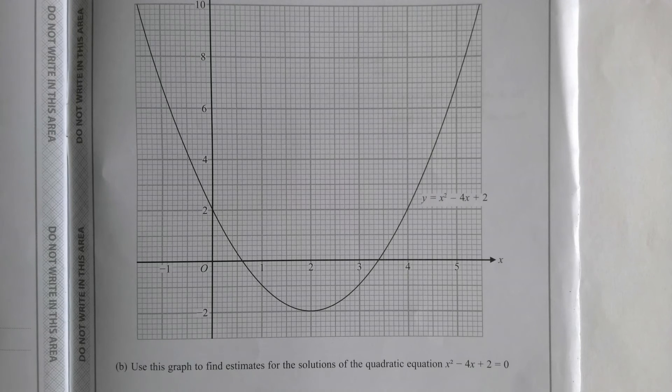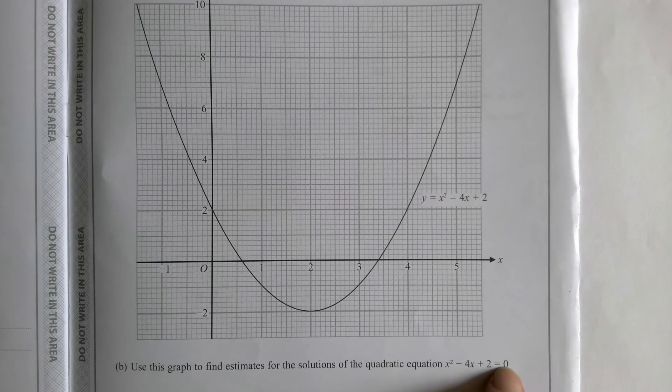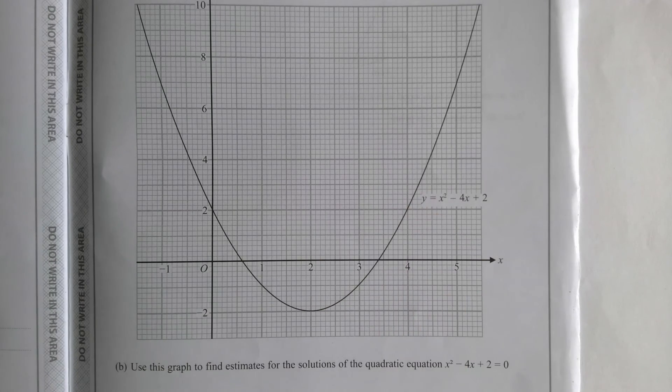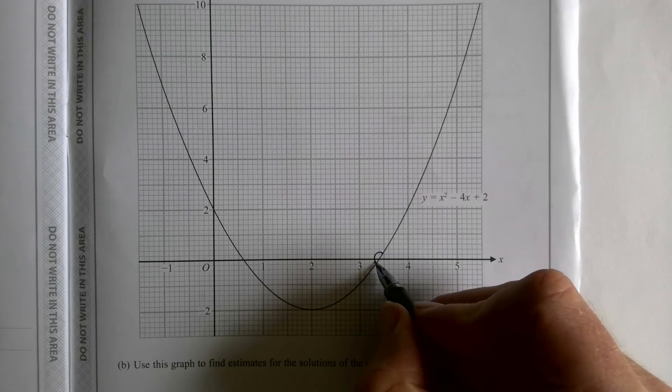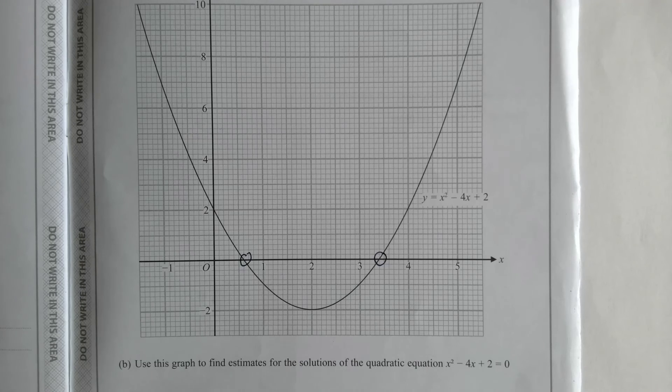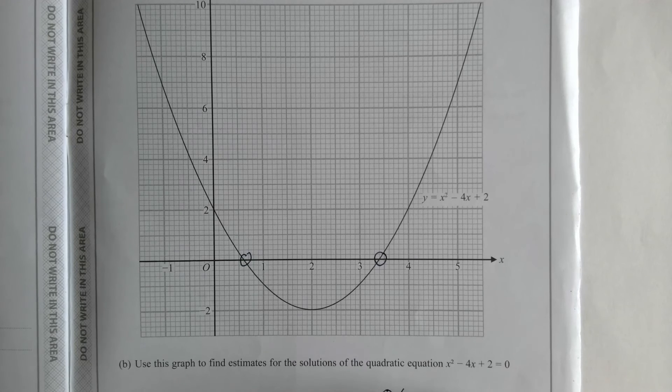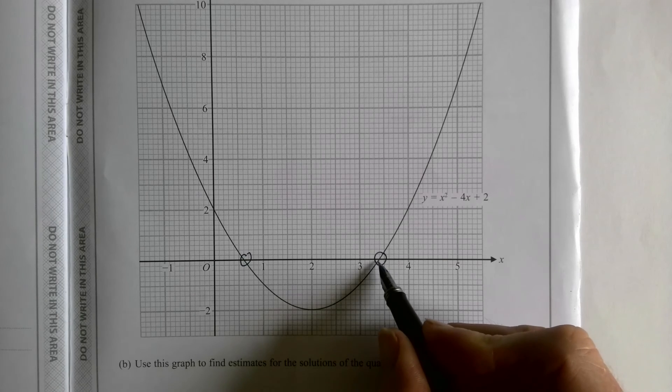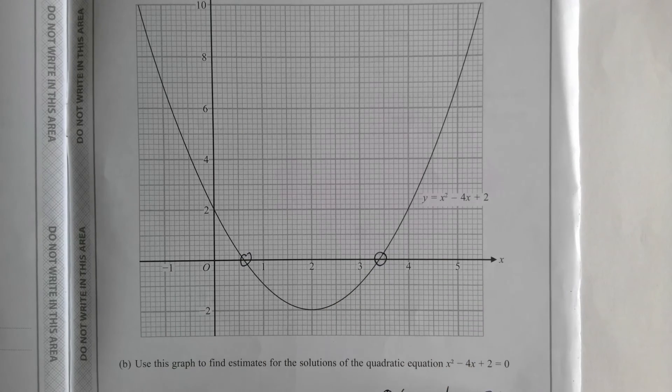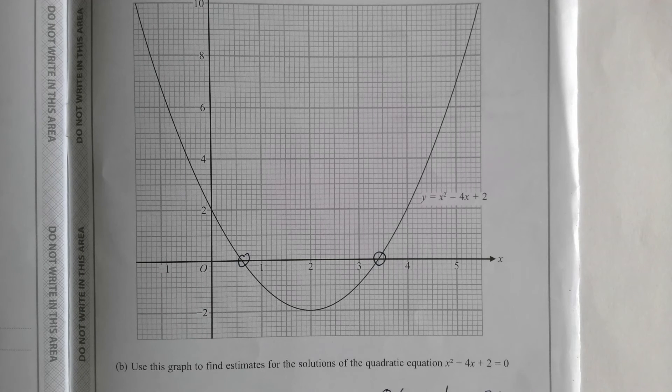Part B is a little trickier because it just gives you this curve. Y equals x squared minus four x plus two. It says find estimates for the solutions. Well, they're known as the roots. The solutions are what value of x will make y zero. Can you see the difference there? You've got zero and you've got y. So when is y zero? It's zero there and it's zero there. So the solutions will be, well, it goes through at 0.6 there. So x equals 0.6 and x equals 1, 2, 3, 3.4. Are you two marks on that bit?